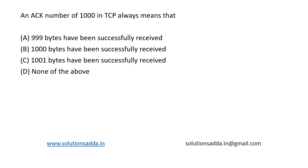The acknowledgement number is the sequence number of the next byte the receiver is expecting. The sequence number is the byte number of the first byte of the data in the TCP segment sent. So an acknowledgement number in TCP tells which byte it is expecting to receive next.